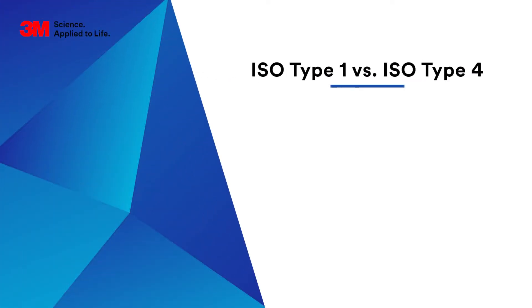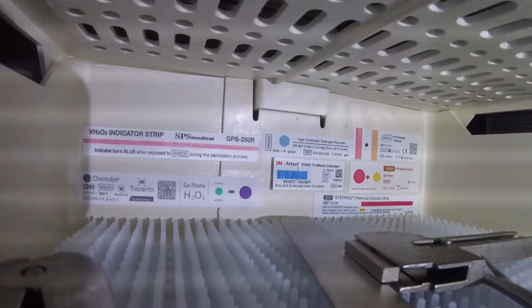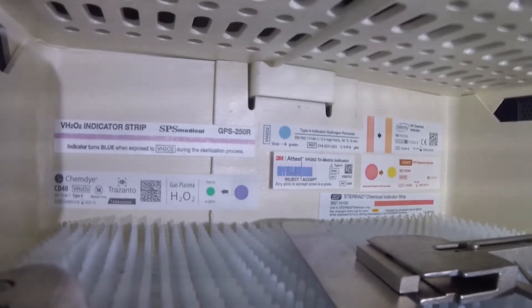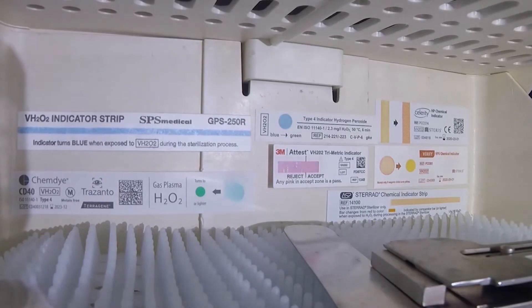Welcome to the 3M demonstration video on the important and critical differences between ISO Type 1 and Type 4 vaporized hydrogen peroxide chemical indicators.